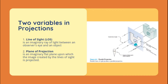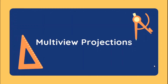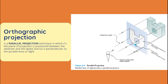What is orthographic projection? Knowing what parallel projection is, orthographic projection is a parallel projection technique in which, first, the plane of projection is positioned between the observer and the object, and second, it is perpendicular to the parallel lines of sight. This means our plane of projection creates a 90-degree angle with our lines of sight for it to be referred to as an orthographic projection.